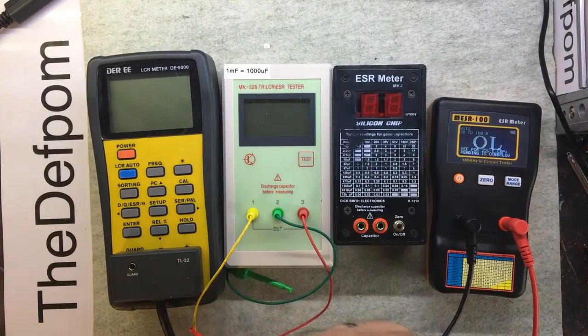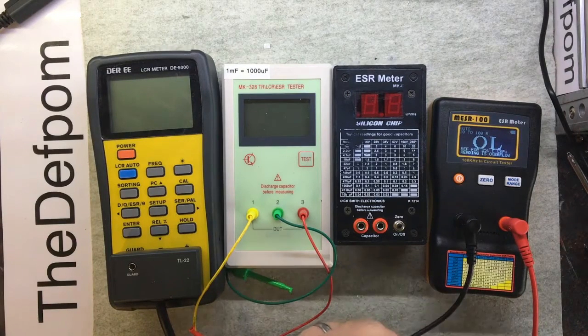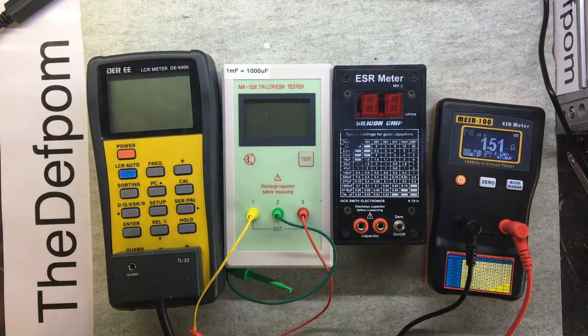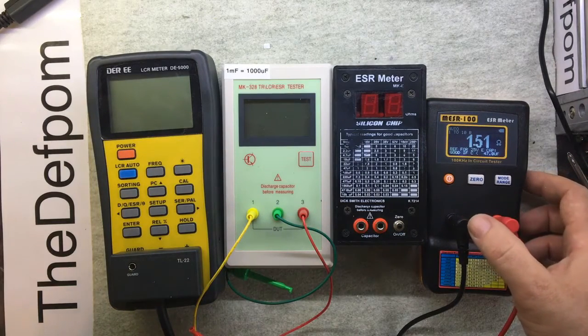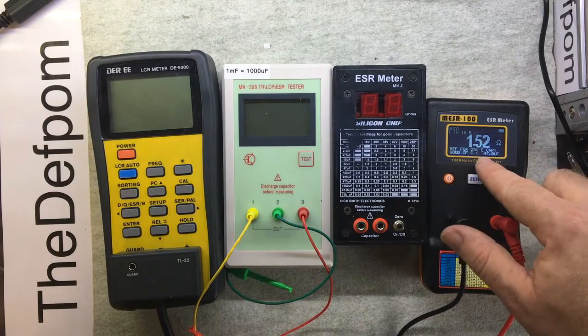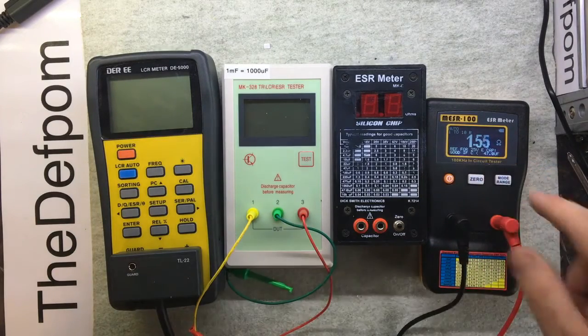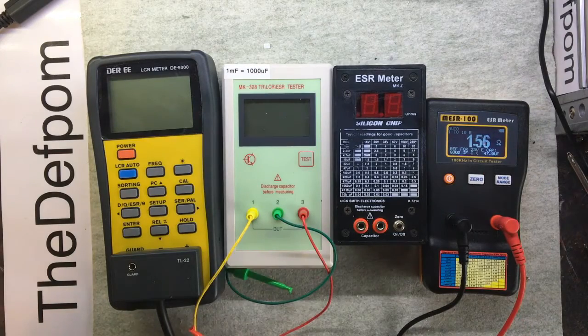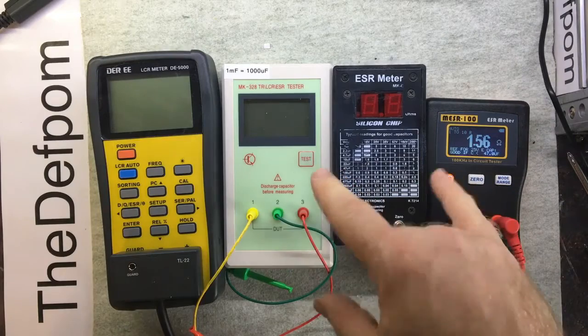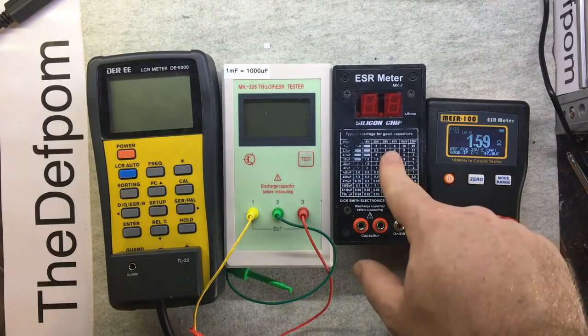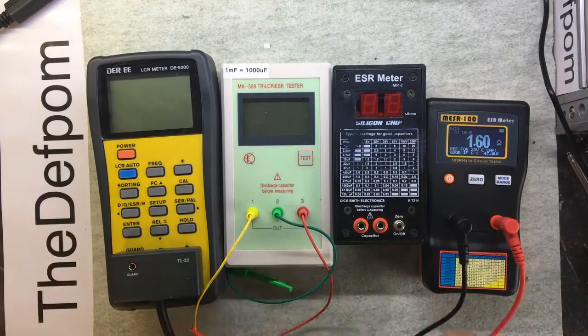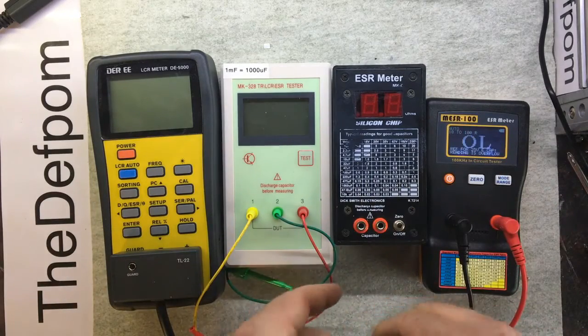1.5 ohms, so good. Capacitance 47 microfarads. Well it is, it's only small. These three agree really closely, so that's quite good. 1.6, 1.7, 1.5, 1.6, so let's look at the first one again, the DER.